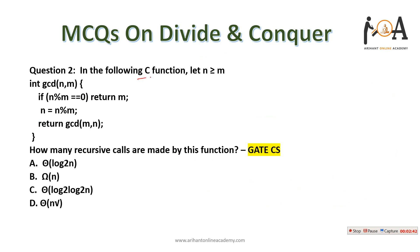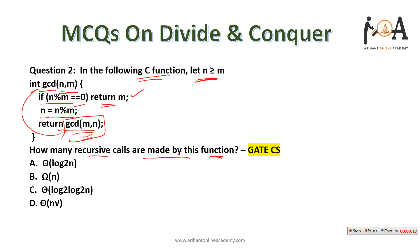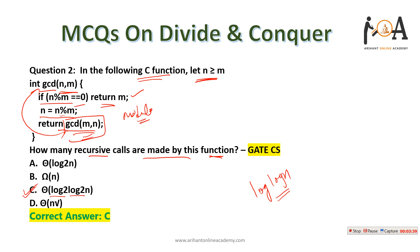The next question: in the following C function where N ≥ M — int GCD (greatest common divisor) of N and M — if N modulus M equals 0 then return M, else N = N modulus M, return GCD(M, N). How many recursive calls are made? Since the modulo function is called, the time complexity is Θ(log log N). Option C is the correct answer.